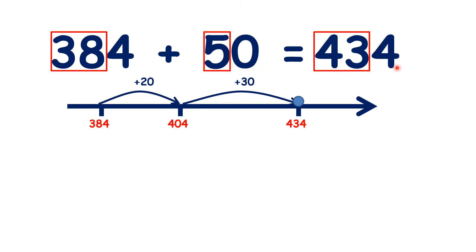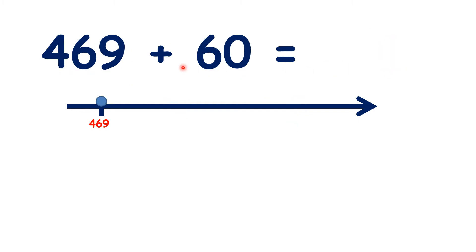So if you know that 38 plus 5 is 43, you know that 384 plus 50 is 434. Because we're only adding tens, the units' digit stays the same. So pause the video and see if you can work out 469 plus 60.